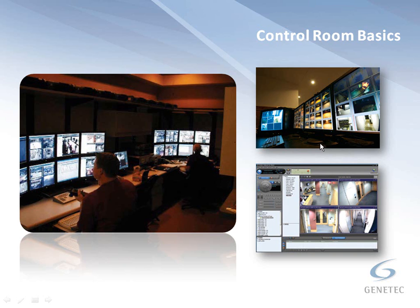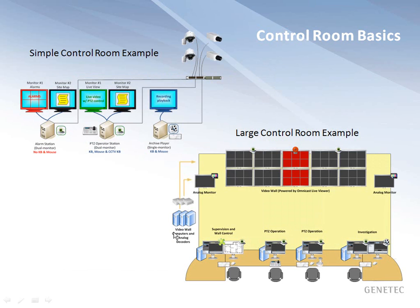Some of the things we can do in Omnicast to help manage our control room include: selecting any live camera for viewing on any monitor, viewing recorded footage from any camera on any monitor, selecting and controlling any PTZ camera, and managing live events and alarms in real time. In a control room we can have large screen displays for a centralized point of information, audio systems for audible alarms, or interaction with mics and speakers such as an intercom. The features selected must provide operators with an intelligent and intuitive user interface.